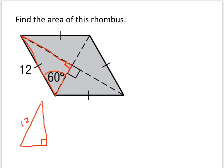We know that the hypotenuse is 12, and that means the short leg is 6, and the long leg is 6√3.